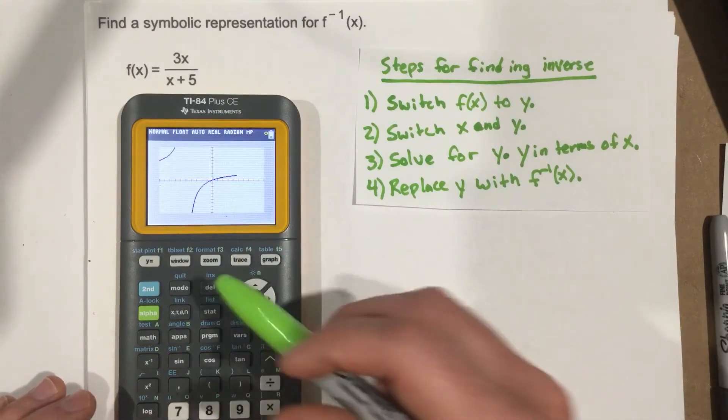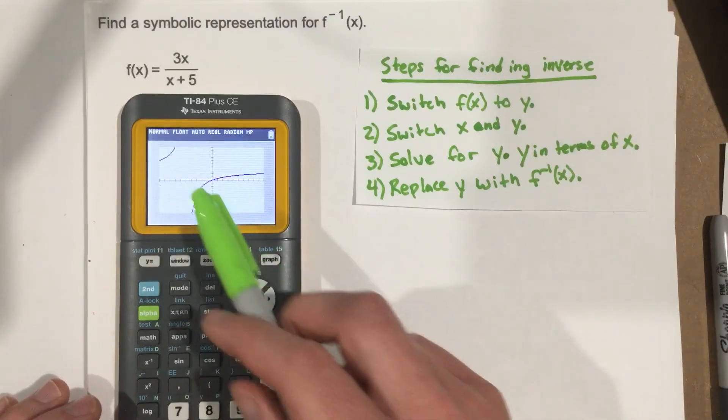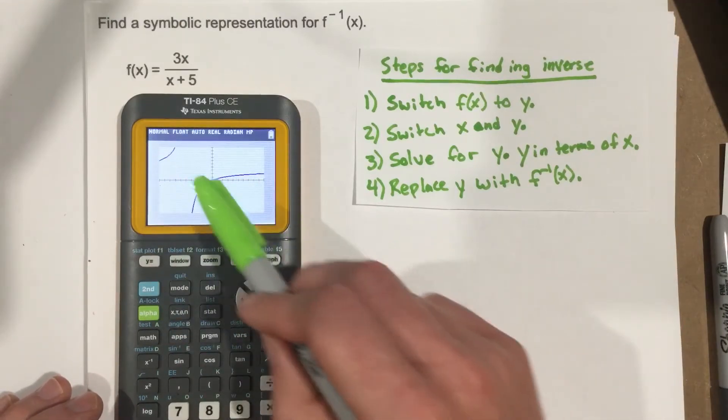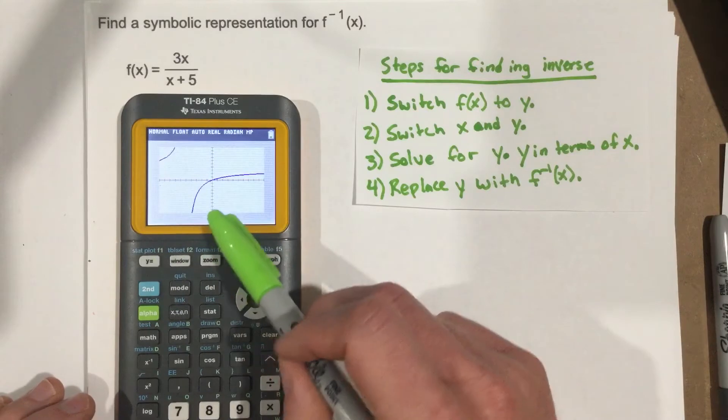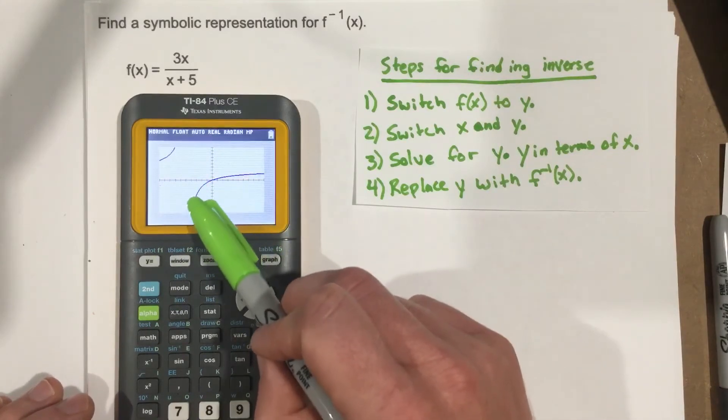Now you can see if you do the horizontal line test, this isn't quite a big enough window, but you can see this is a type of rational equation graph.